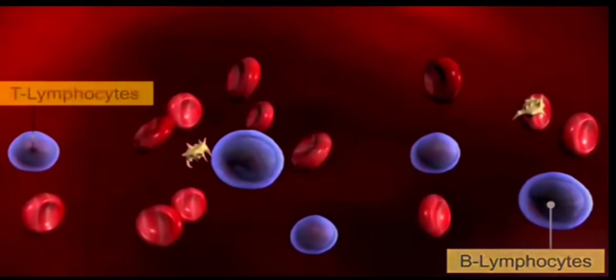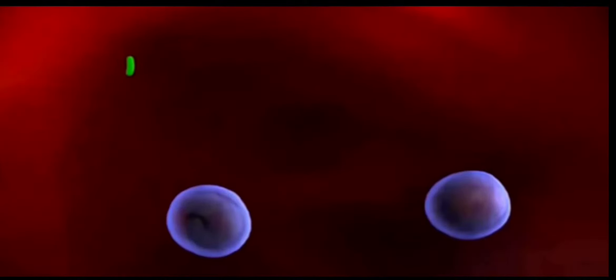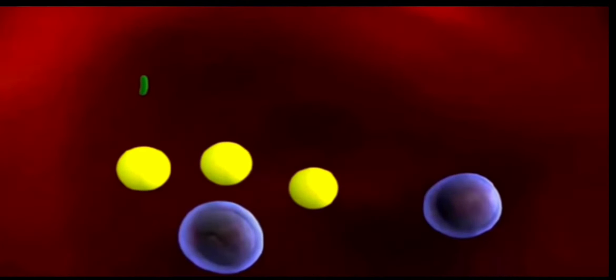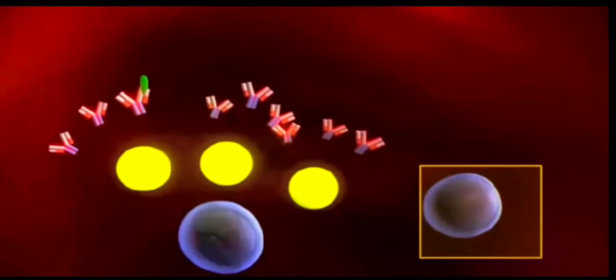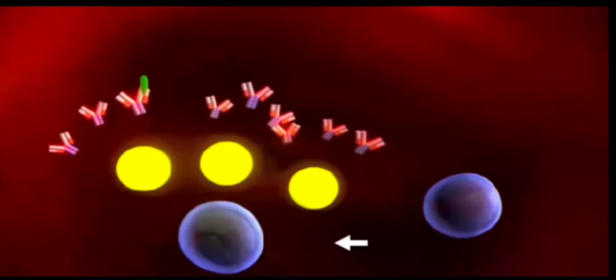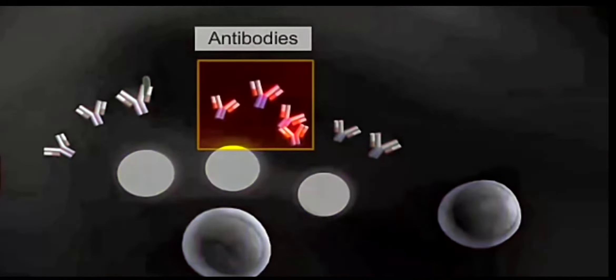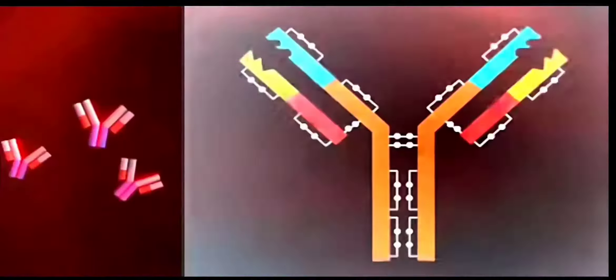Our lymphocytes, which are of two types - B lymphocytes and T lymphocytes - are basically responsible for our immune response. They produce certain chemicals which help us to fight against diseases. These chemicals are called antibodies.